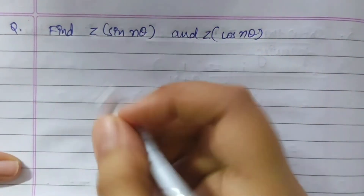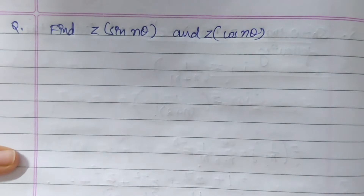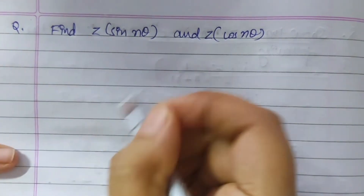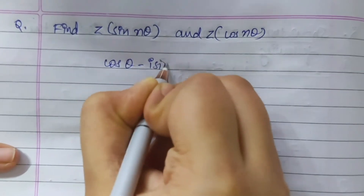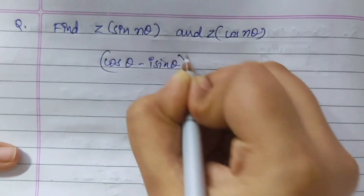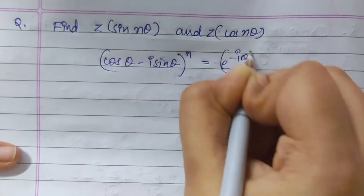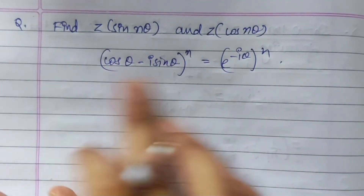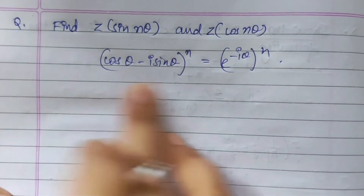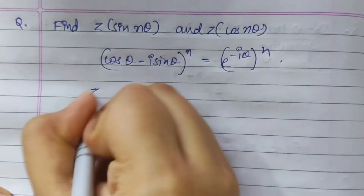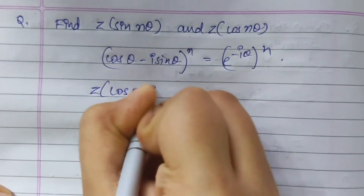Find Z of sin(nθ) and cos(nθ). We know that (cos θ minus i sin θ) to the power n equals e to the power minus i theta, the whole to the power n. This is a formula you need to remember. Now by taking the Z-transform on both sides, what do we get?